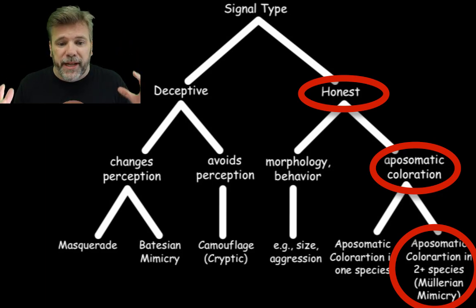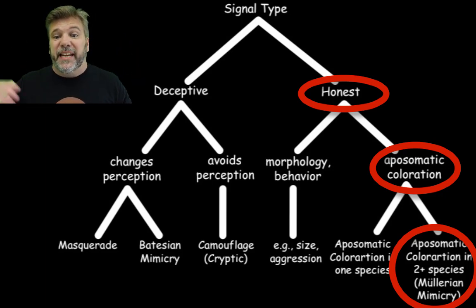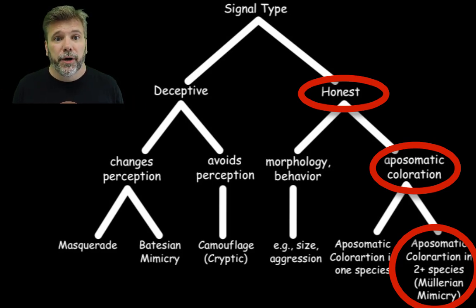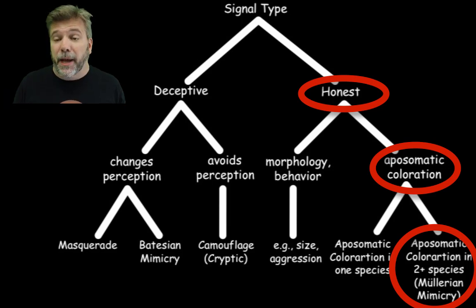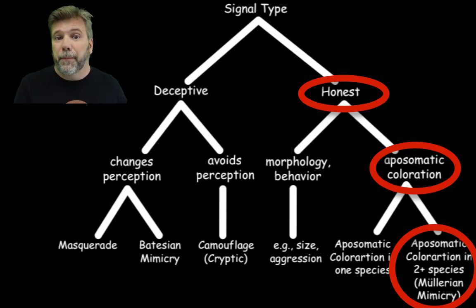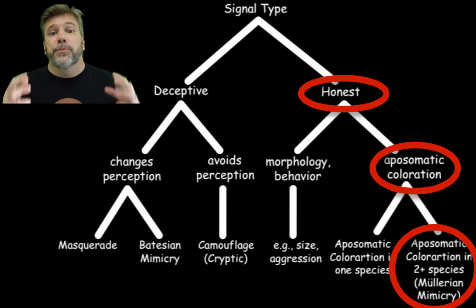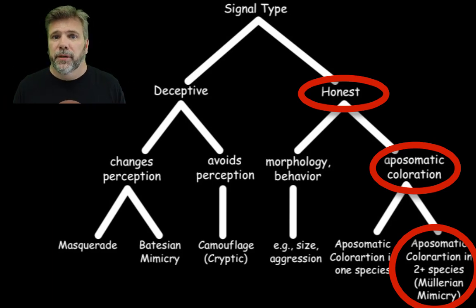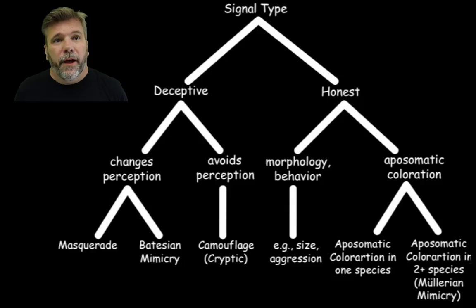Sometimes two, three, dozens, or even hundreds of species in a given area all converge on looking the same — all dangerous, all tasting bad, something about them is dangerous. That convergent evolution onto a single pattern makes it easier for predators to identify which species are dangerous, and it also benefits those species because they're not eaten as often. This is called Mullerian mimicry — when dangerous prey items end up looking alike.